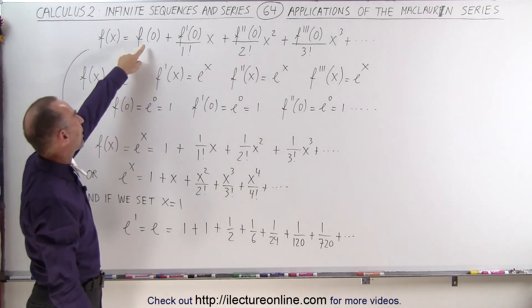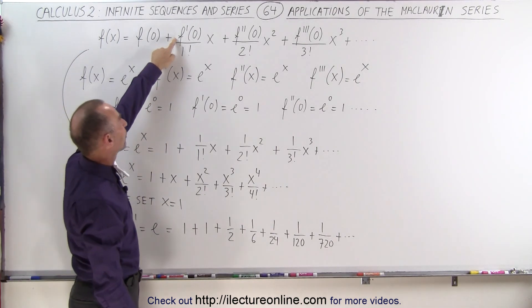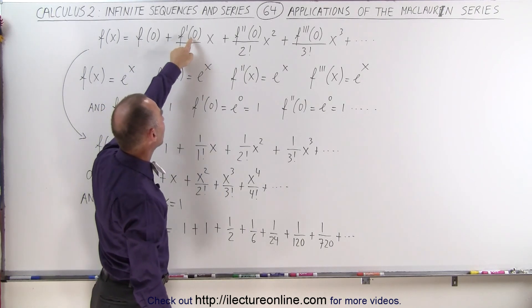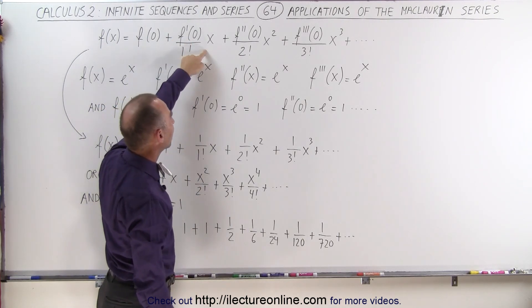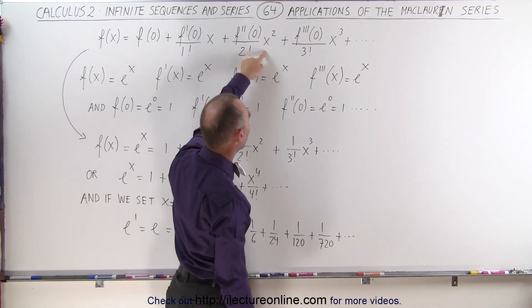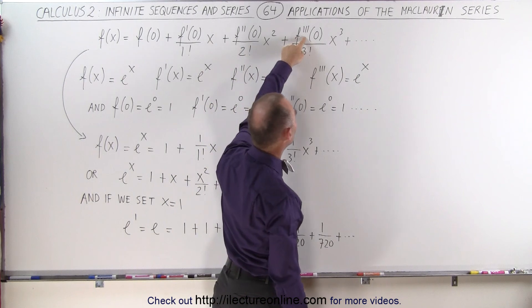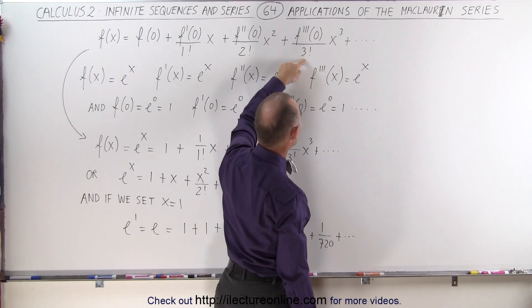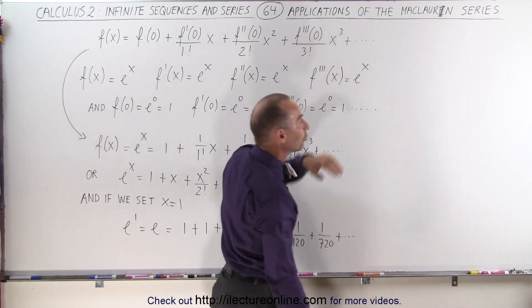f of x is equal to f evaluated at 0 plus the first derivative evaluated at 0 divided by 1 factorial times x plus the second derivative evaluated at 0 divided by 2 factorial times x squared plus the third derivative evaluated at 0 divided by 3 factorial times x cubed and so forth.